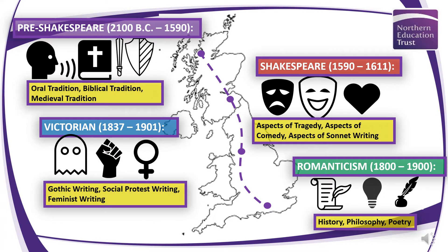Here's a little map of where we're going today — a map of the UK because we're predominantly staying within authors from Great Britain as part of the curriculum. We'll begin with pre-Shakespeare, looking at around 2100 BC up until 1590 — a massive space of time. We're going to look at three aspects: the oral tradition, the biblical tradition, and the medieval tradition. Those three traditions of course influence Shakespeare, so we're looking at around 1590 to 1611, the time in which he was prolific as a writer.